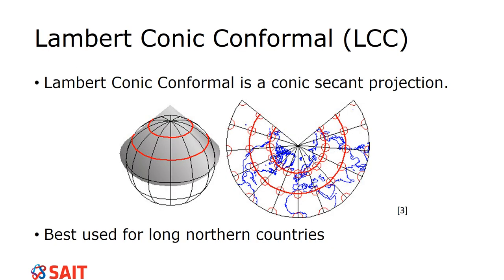The Lambert Conic Conformal is best used for long east-west countries like Canada. It is a conic secant projection with two lines of zero distortion. You can see it matches Canada well, and the US also uses LCC. Watch the video for this one - you don't need to memorize any formulas. Just visualize what's happening: where are the zero-distortion lines and why is it set up this way? Answer those questions in your own notes while watching.